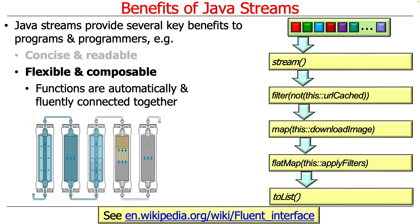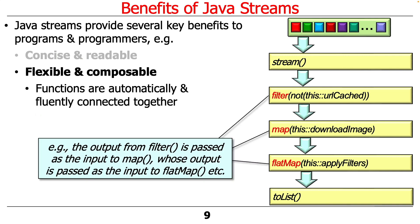Another nice benefit of streams is that they are flexible and composable. The functions or methods can be automatically and fluently connected together. Like the water filtration system we've talked about before, you can chain everything together. The output from one intermediate operation like filter is then piped into the map operation, which is then piped into the flatMap operation. These things all come together in a nice fluent way — it's easy to see, easy to understand, and keeps things very nicely structured. You can plug and play in all kinds of interesting ways.